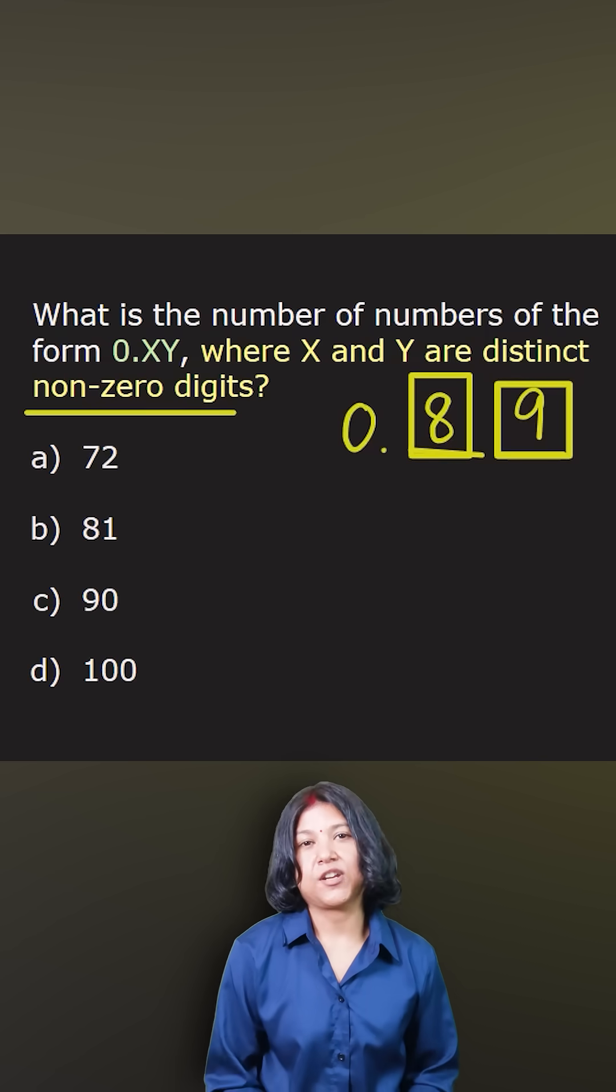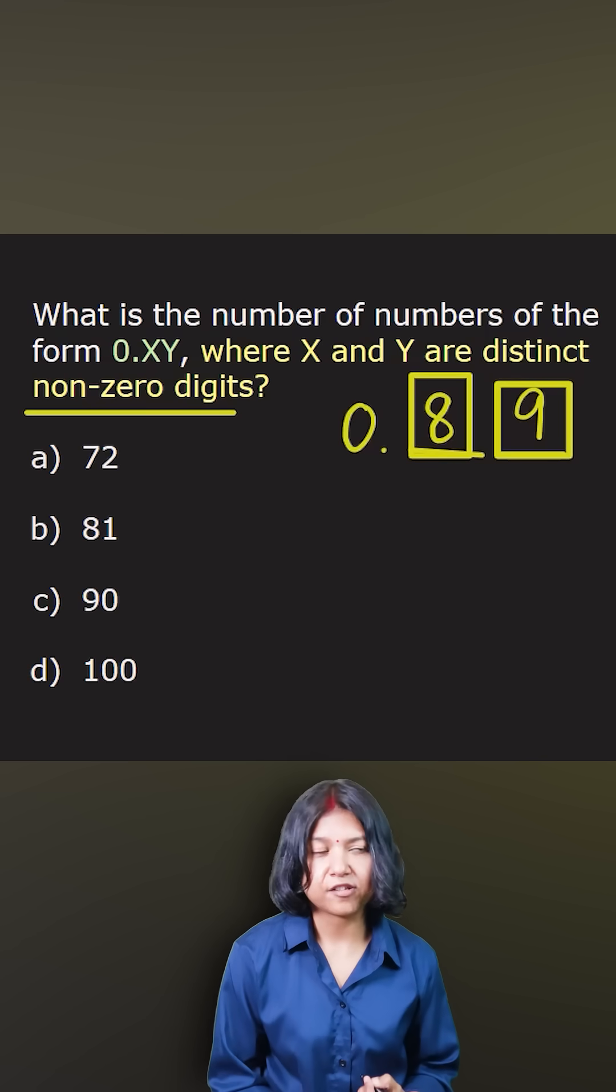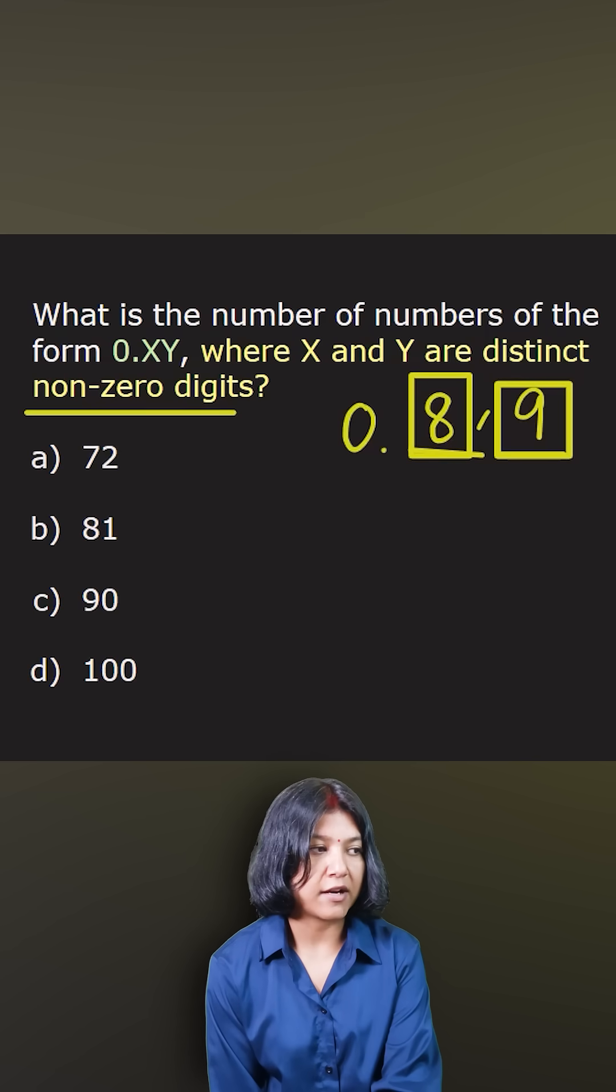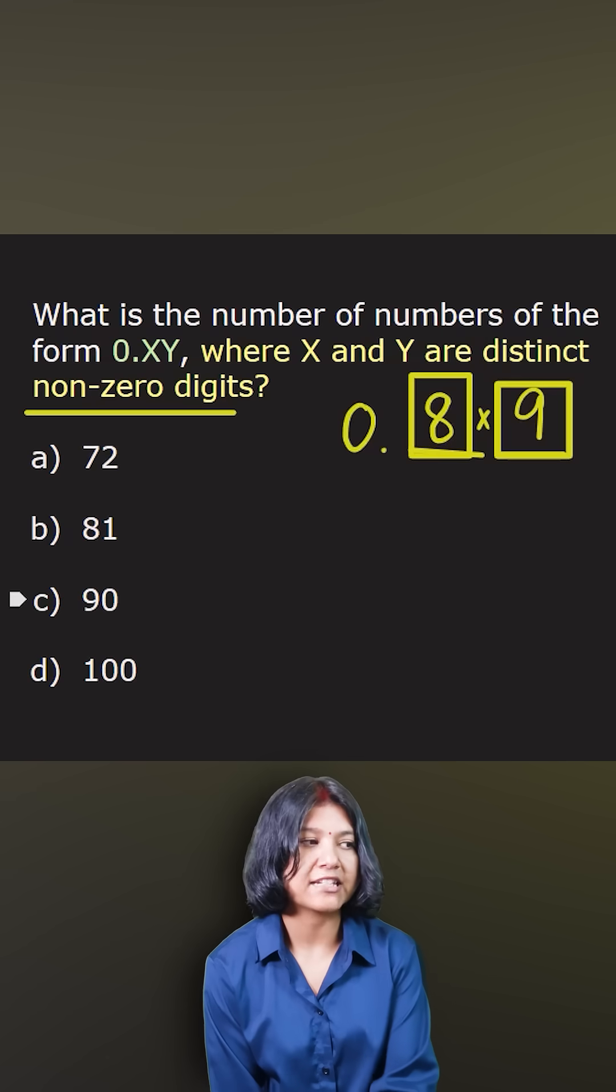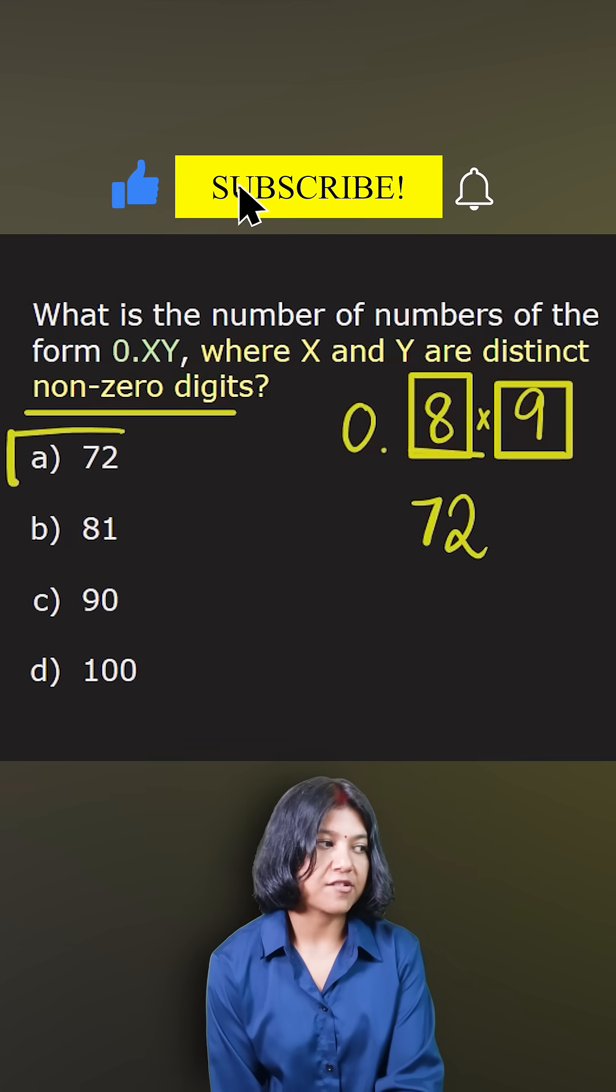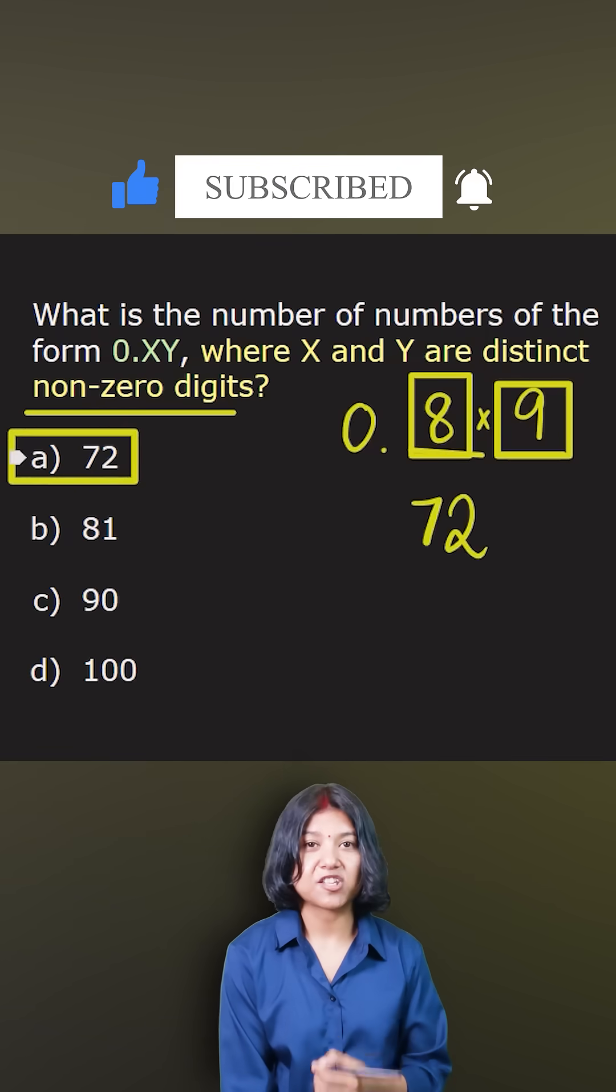Why did we multiply? Because there are nine options in the first place and eight options in the next. So eight times nine is 72. The answer is 72 - we have 72 such possibilities.